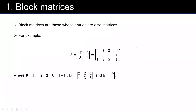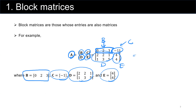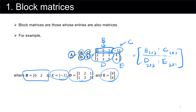Block matrices are matrices whose entries are also matrices. For example, matrix A is created by block matrices B, C, E, and D, where matrix B is defined as [0, 2, 3] (1 by 3), matrix C is -1 (1 by 1), matrix D is a 2 by 3 matrix, and matrix E is a 2 by 1 matrix. So the overall matrix A is a 3 by 4 matrix.